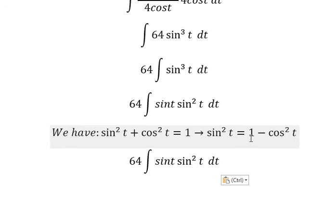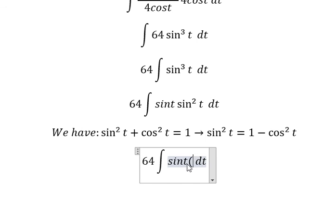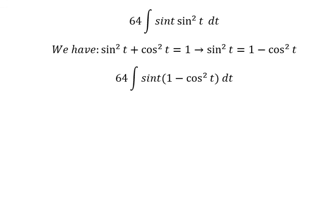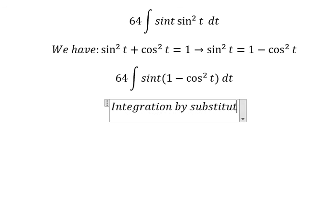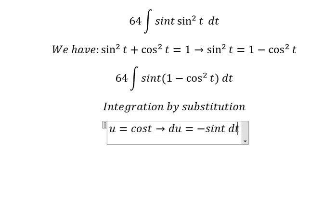And now I will put this one here. Next, we need to use integration by substitution. So I will put u equals cosine t. After that, we need to do first derivative for both sides and we have negative sine t dt.